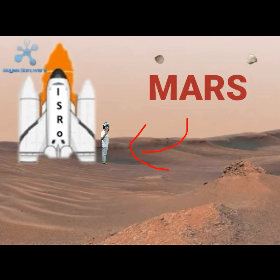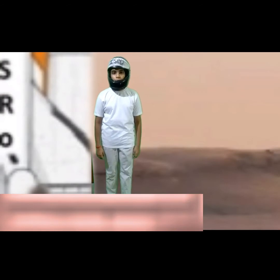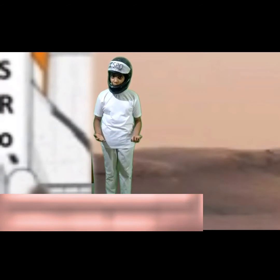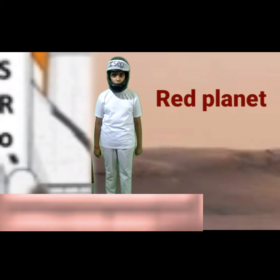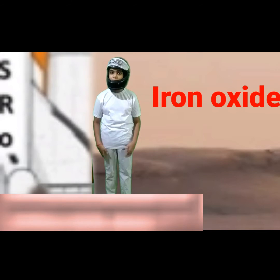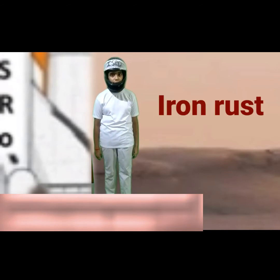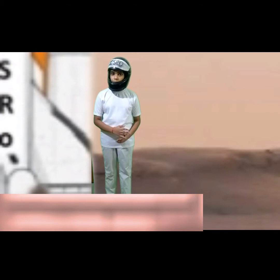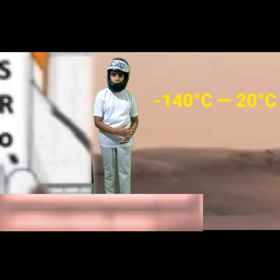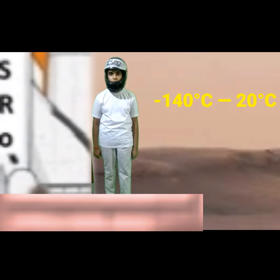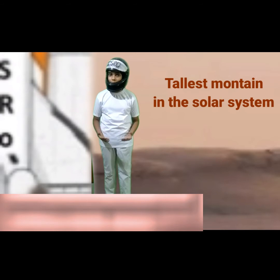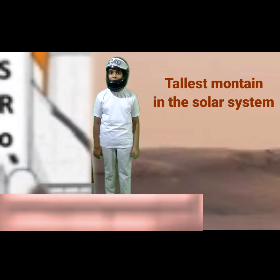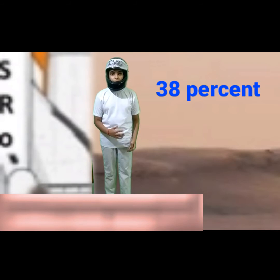Now I am standing on Mars, the fourth planet of the solar system. Do you know that Mars also has a nickname? It's called the Red Planet, because the soil on Mars contains a rich content of iron oxide, or iron rust. The temperature on Mars varies from minus 140°C to 20°C. Mars is home to the tallest mountain in the entire solar system, and its gravitational pull is only about 38% of Earth's gravitation.